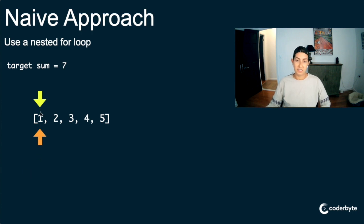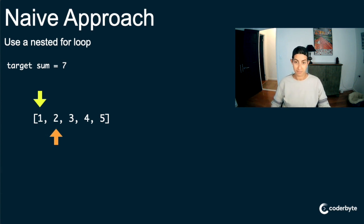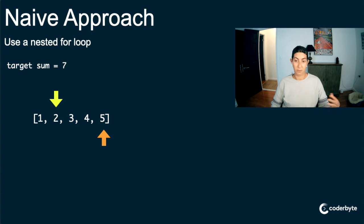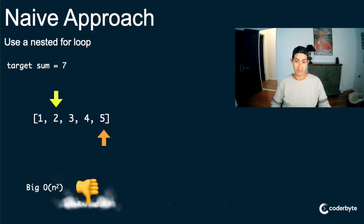Let's watch that. The yellow arrow is the outer for loop. We start at index zero — we have element 1 — and for each iteration of the yellow arrow we look at every other element. Does 1 and 2 make 7? No. Does 3 and 1 make 7? No. Does 4 and 1 make 7? Nope. Does 5 and 1 make 7? Nope. We've exhausted those combinations and move to element 2. Does 2 and 3 make 7? No. Does 2 and 4? No. And finally we get to 5 and 2 — that was a lot of operations.